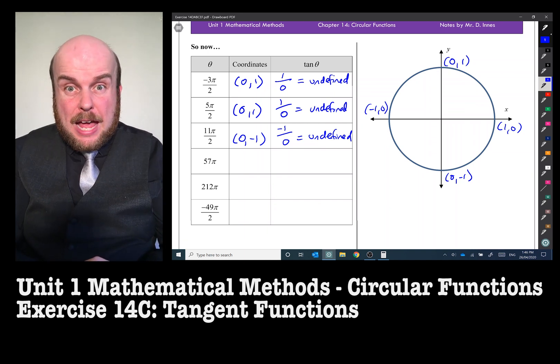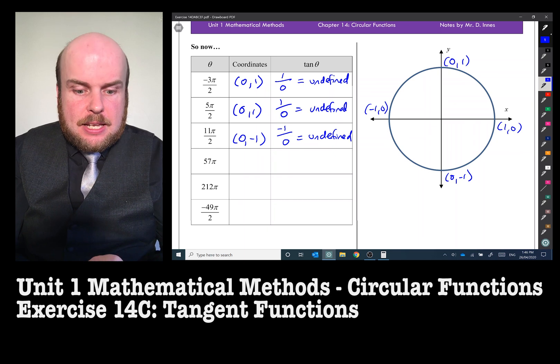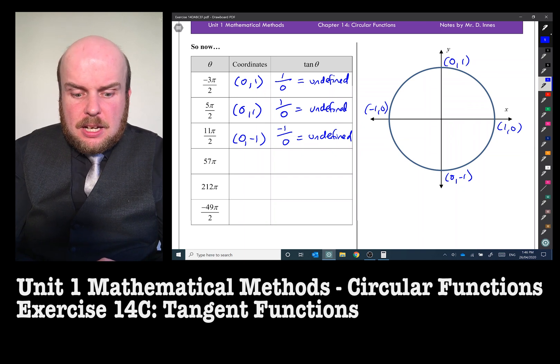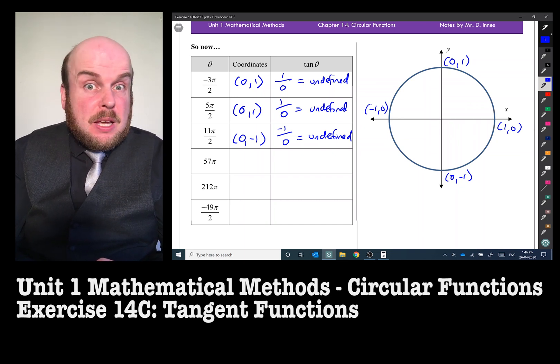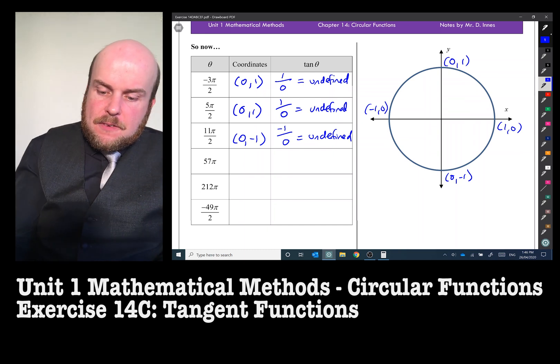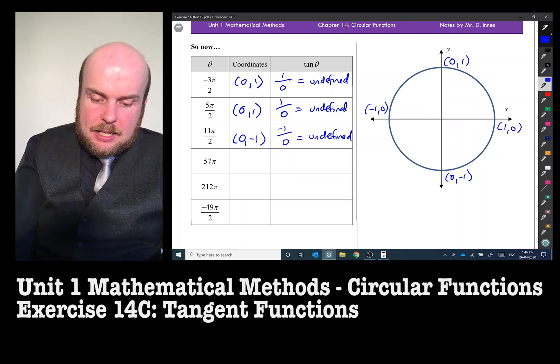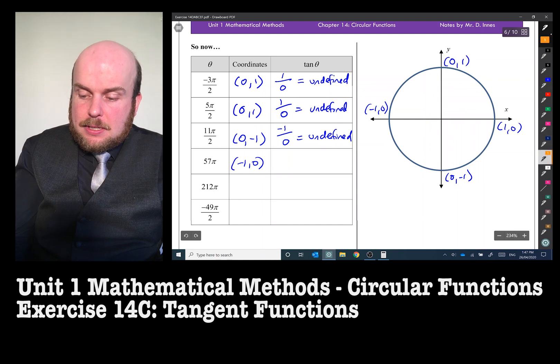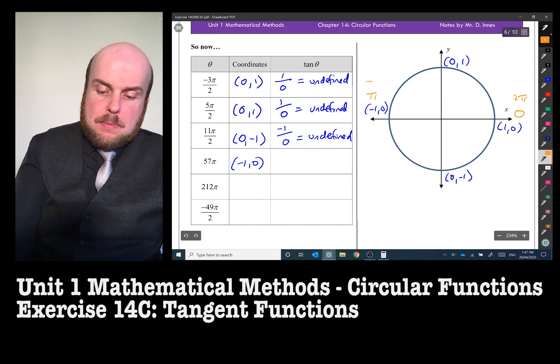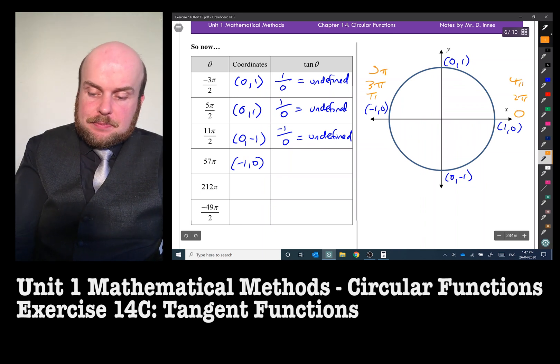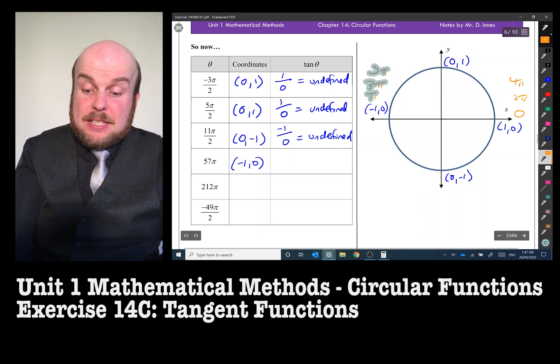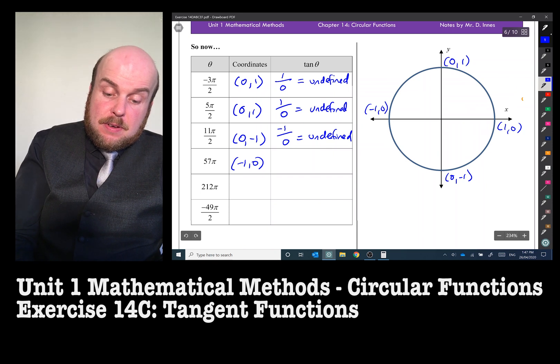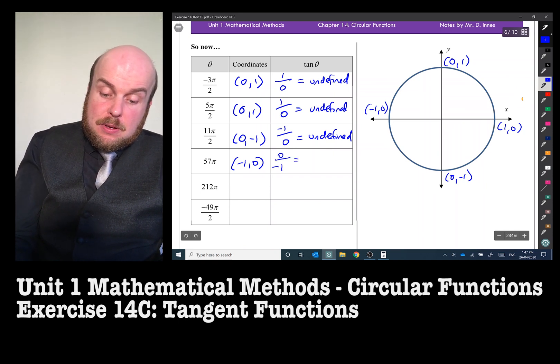So you possibly may have hazarded a guess here that any time you try to do tan of something that is like π/2, it's going to be undefined. Whereas these other little friends that don't have a divided by 2 are probably going to be equal to 0. So 57π, that's on the left, because that's where the odd pis are. So that's going to be at negative 1, 0. What do I mean by odd pis? Well, this would be 0π, 2π, 3π, 4π, 5π, and so on, continuing that pattern until you get to 57π. And so that's going to be negative 1, 0, 0 divided by negative 1, which equals 0.